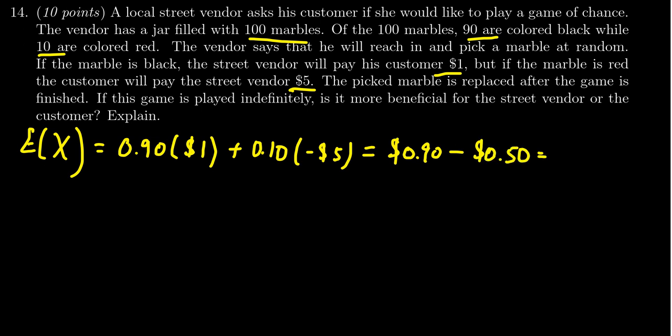So in the end, you end up with 40 cents. This is the expected value. So what this tells us is that if you were to play this game over and over again, then you would expect to, on average, earn 40 cents each time you play this game. So this means that the customer expects to gain 40 cents for each game she plays.